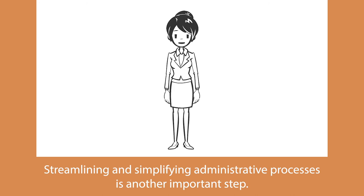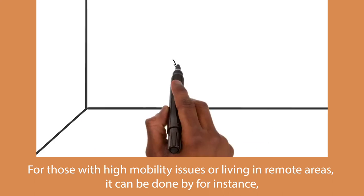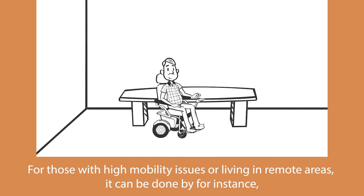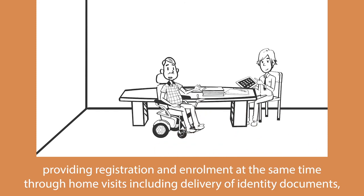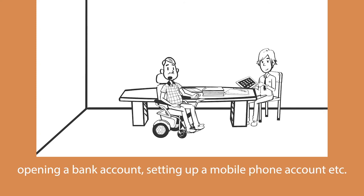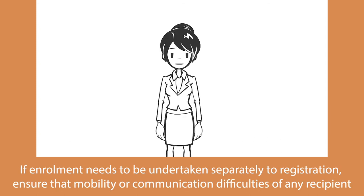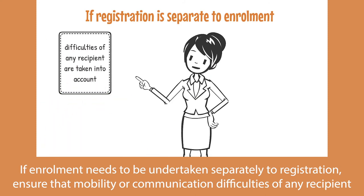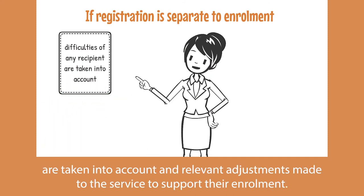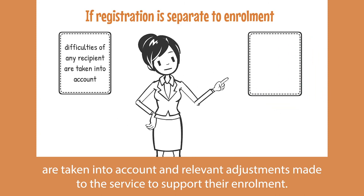Streamlining and simplifying administrative processes is another important step. For those with high mobility issues or living in remote areas, this can be done by providing registration and enrollment at the same time through home visits, including delivery of identity documents, opening a bank account, and setting up a mobile phone account. If enrollment needs to be undertaken separately from registration, ensure that mobility or communication difficulties of any recipient are taken into account and relevant adjustments made to support their enrollment.